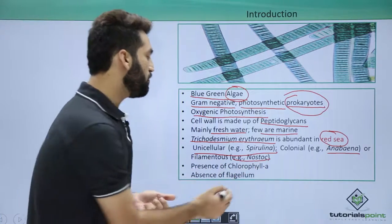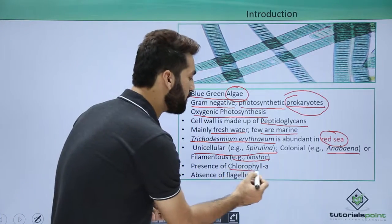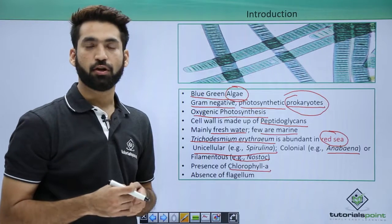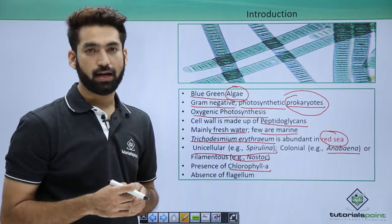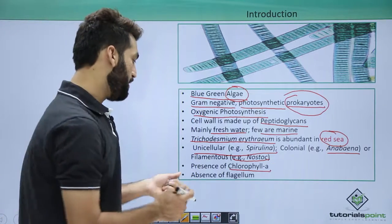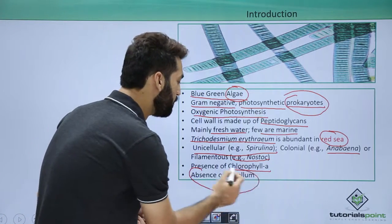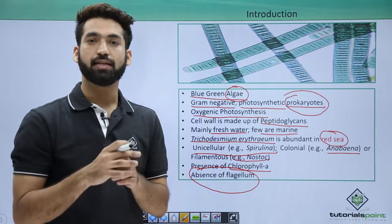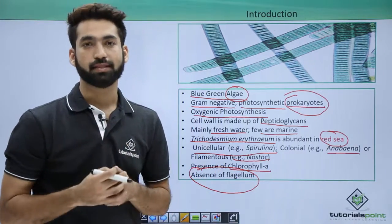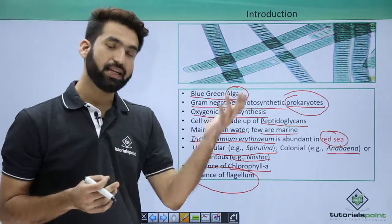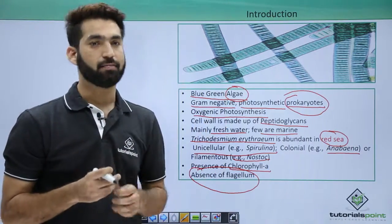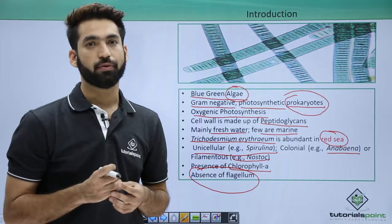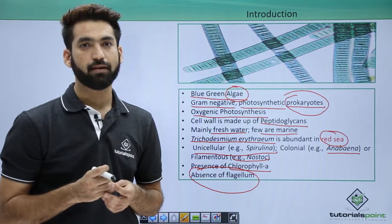Cyanobacteria share the similarity of having chlorophyll A with higher plants. One very important fact is that they do not have flagella throughout their life cycle. Bacteria can have flagella, but cyanobacteria will not have flagella at any stage of their life cycle.